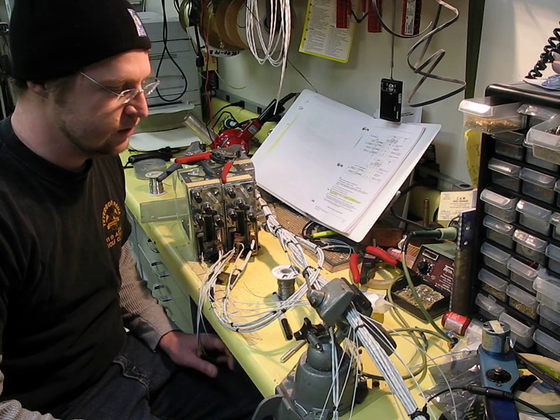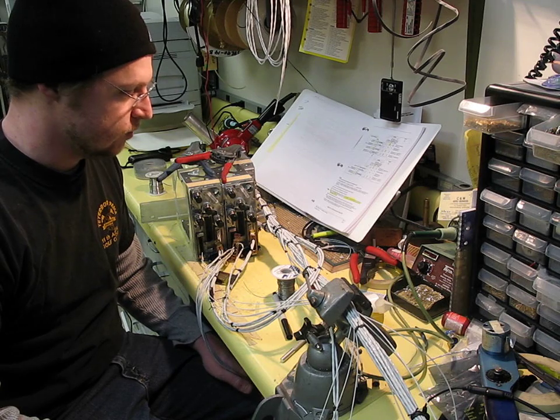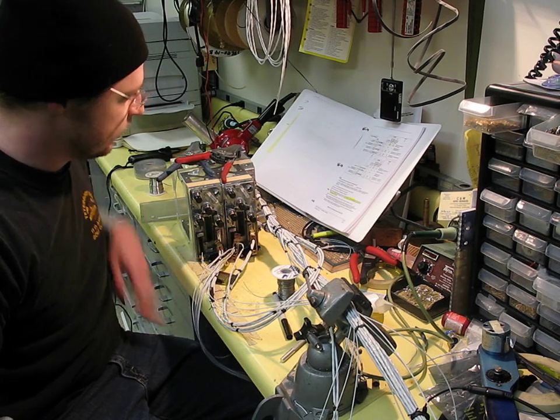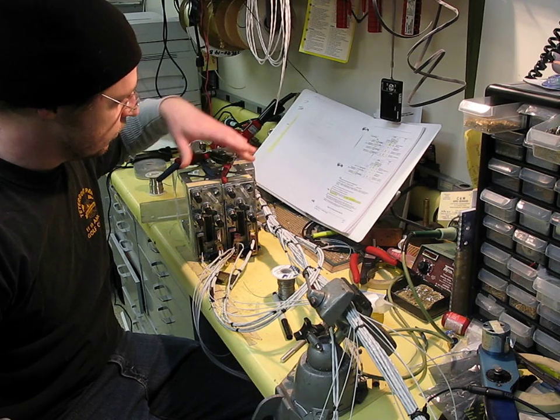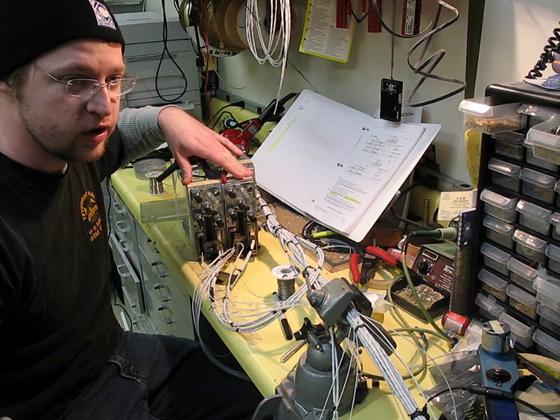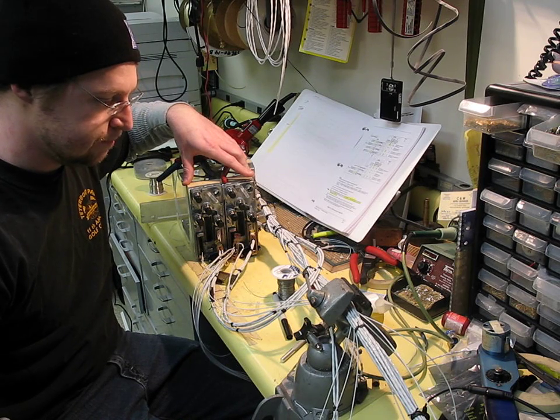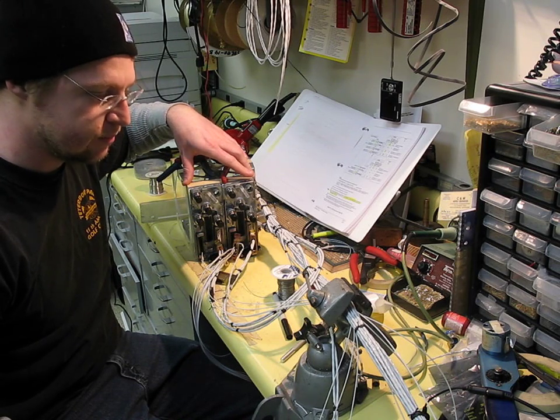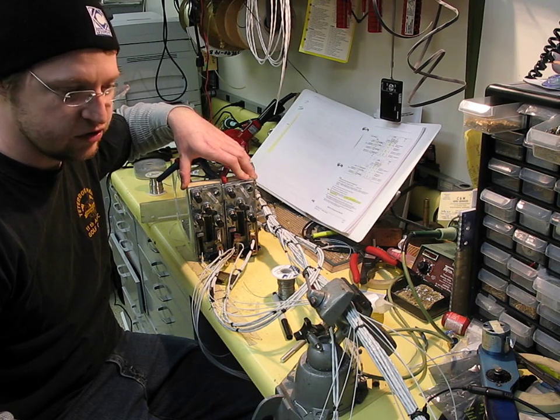Hi, what I've got here is an installation going into a Baron, putting in some nice new equipment here. What we've got is a PMA-8000B audio panel, two Garmin 430 WASS navigators, and we're going to be hooking this up to the new G600 EPIS display, the first installation for us.